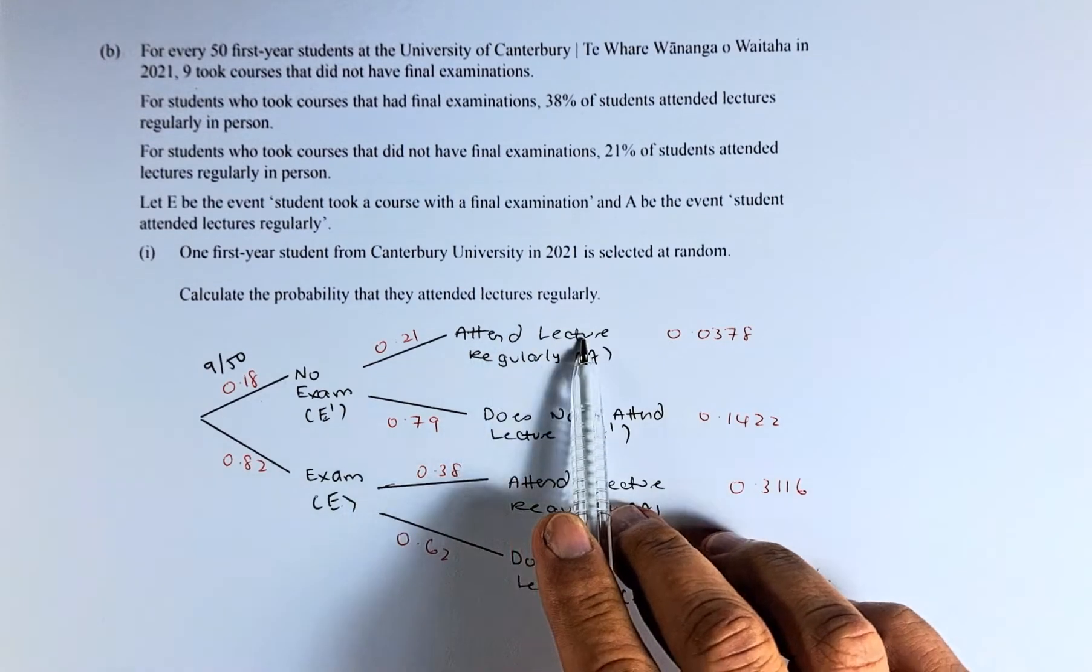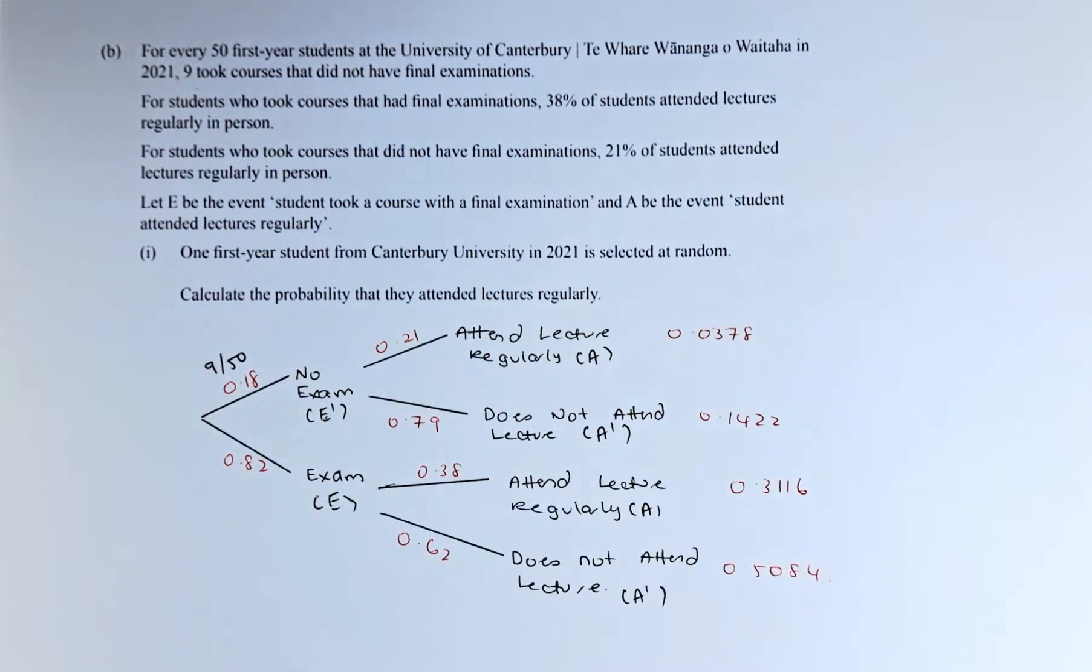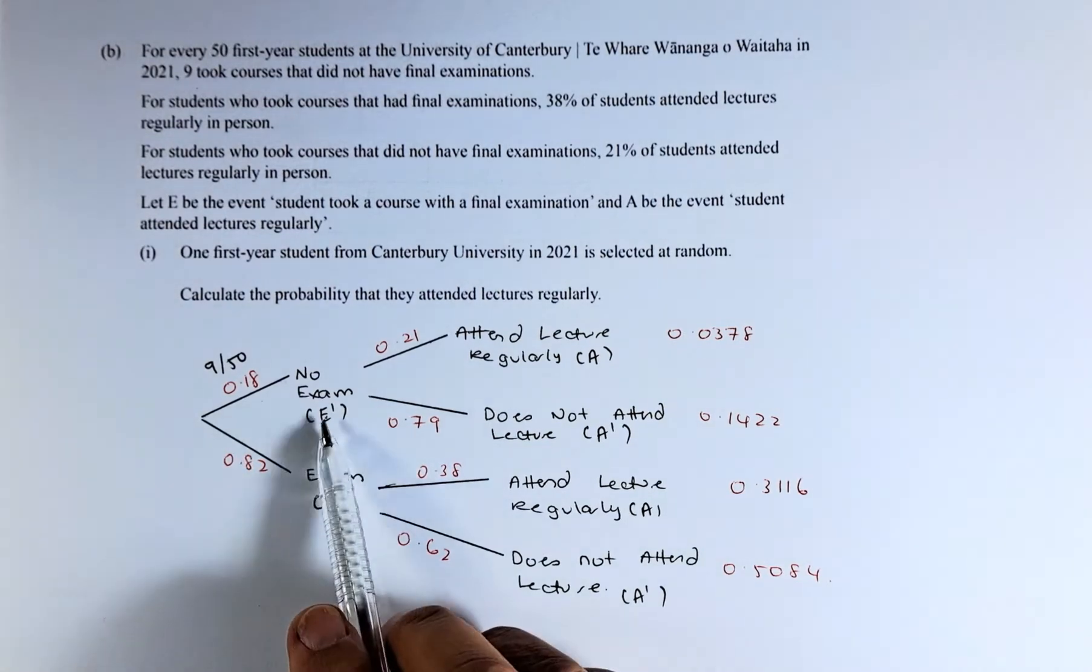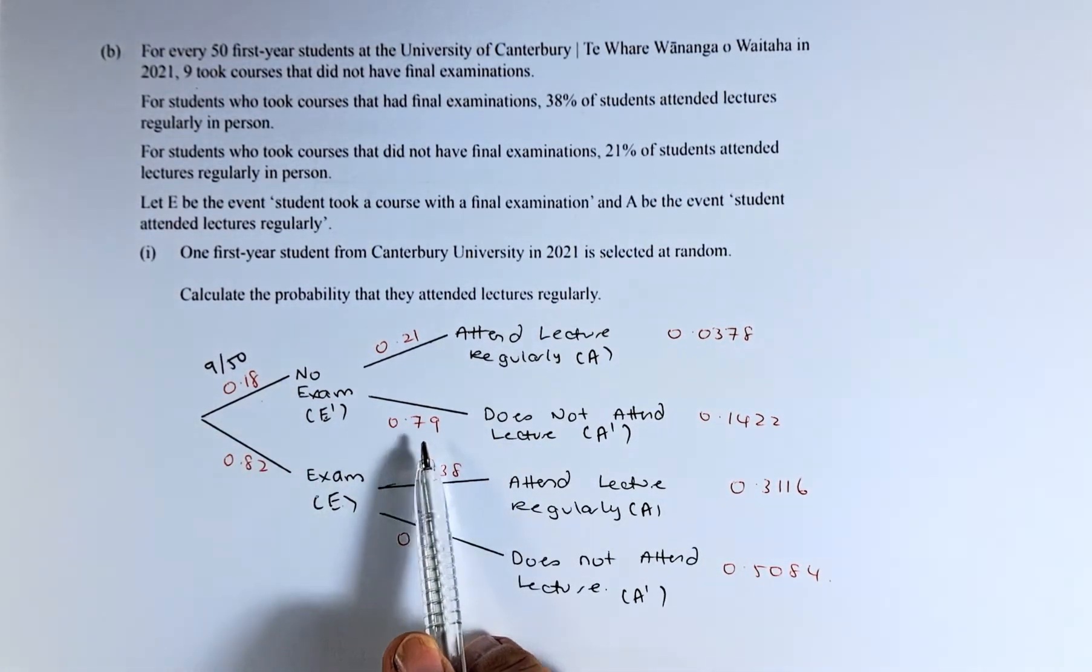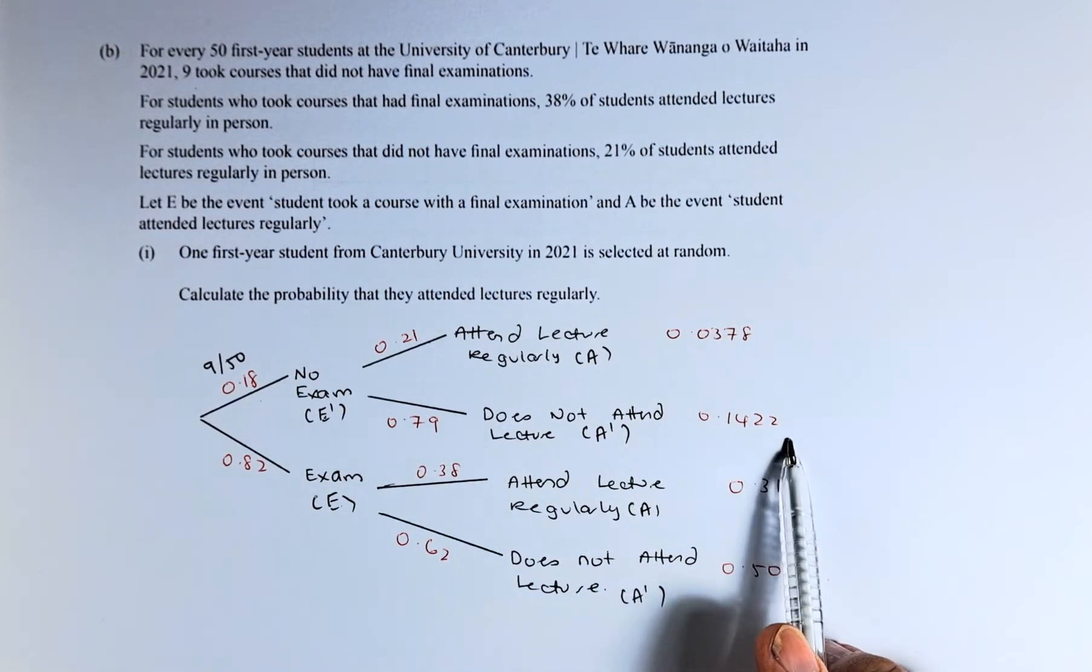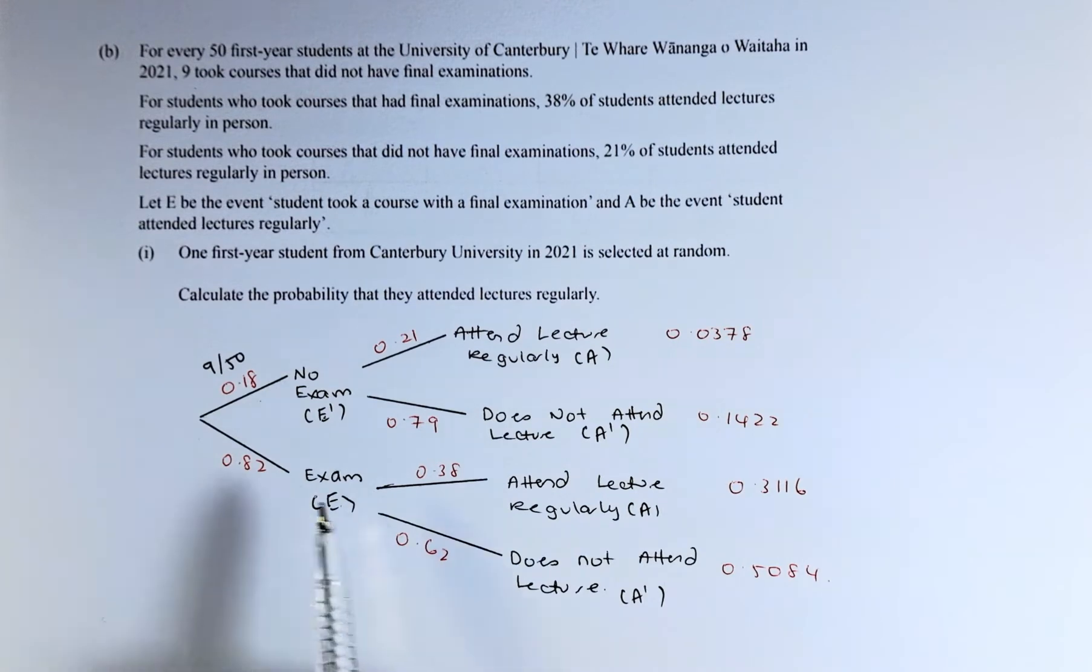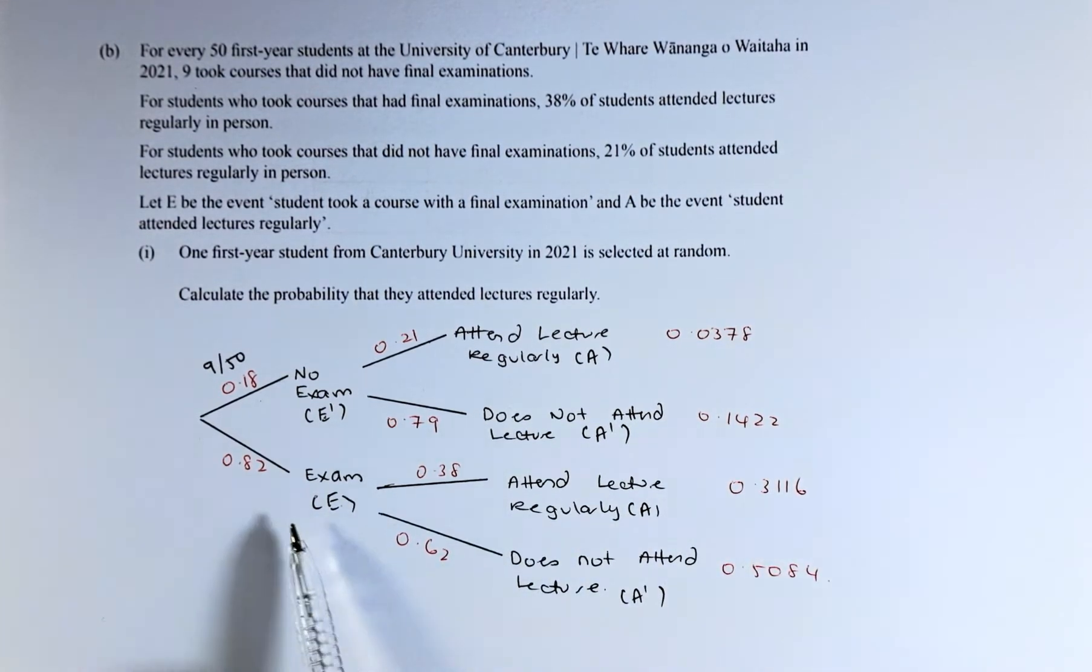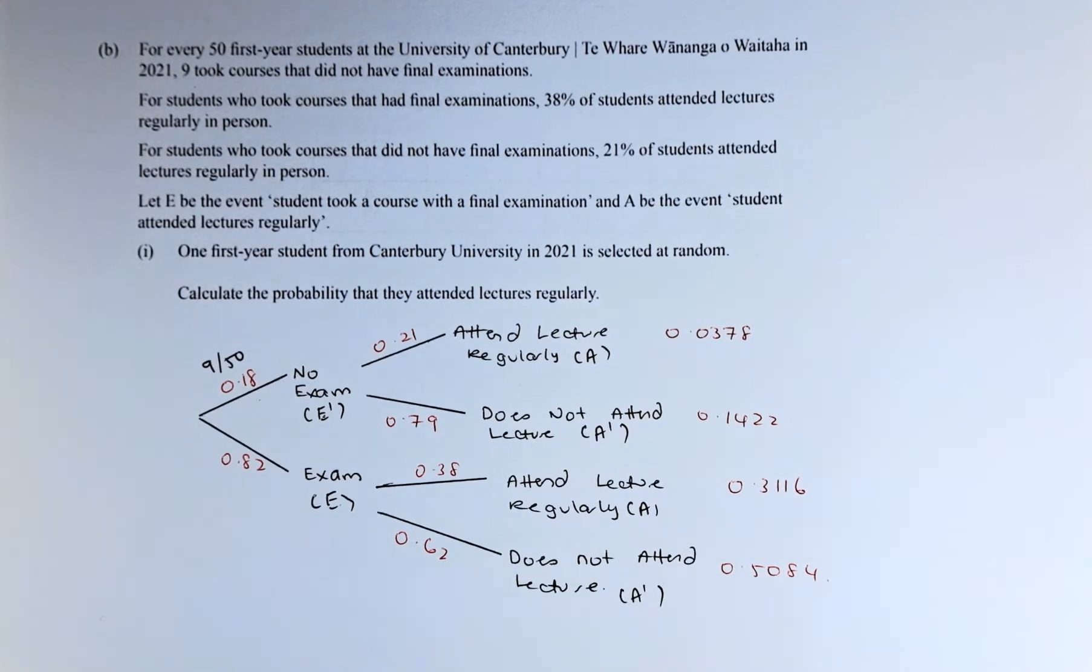No exam, attend lecture regularly: you take 0.18 times 0.21 will give you 0.0378. No exam and does not attend lecture: 0.18 times 0.79 will give us 0.1422. Similarly, exam, attend regularly: 0.82 multiplied by 0.38 will give us 0.3116. And have exam and does not attend lecture: take 0.82 times 0.62 and the answer is 0.5084.